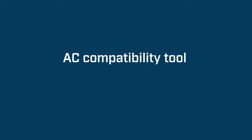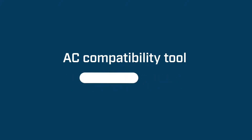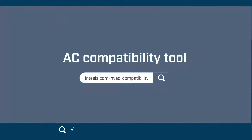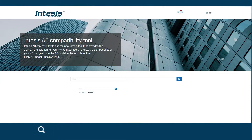Looking for an integration gateway solution for your specific AC unit model? Just dive in. Type intesis.com in your browser and get the Intesis compatibility tool. You will find a clear page where we will only ask you for your AC model.